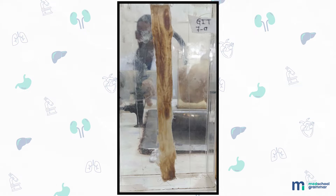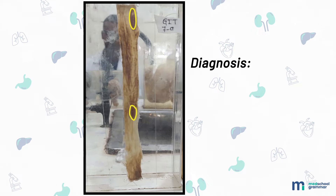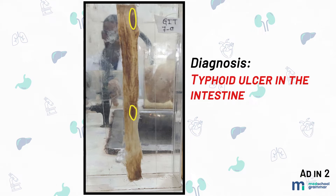Next we have a specimen of the ileum measuring about 30 centimeters in length. The wall is markedly thinned out. The external surface is unremarkable with no evidence of tubercles, hemorrhage, or perforation. The cut surface shows oval ulcers parallel to the longitudinal axis, the largest measuring 1.5 by 0.5 centimeters. The floor shows necrotic material and the edges of the ulcer are raised. Diagnosis: this is a specimen of typhoid ulcers in the intestine.